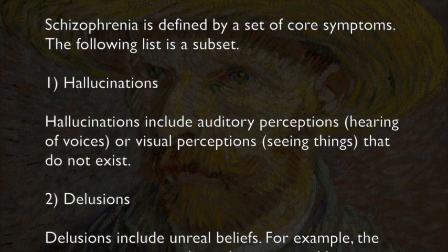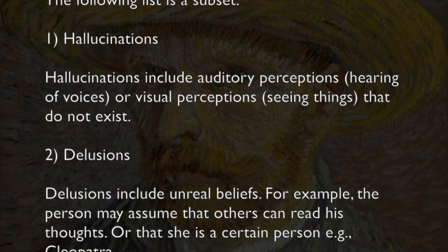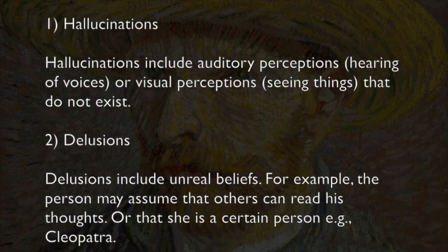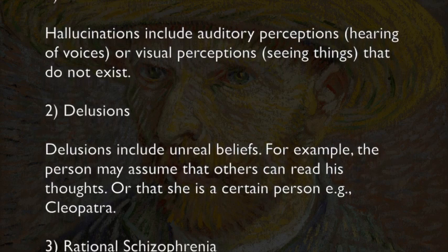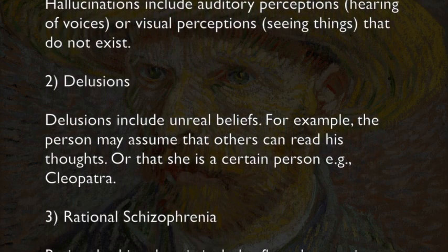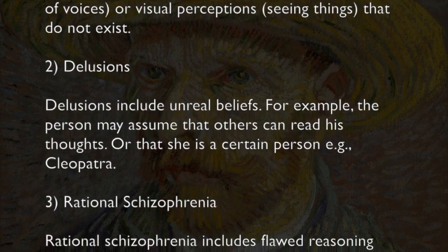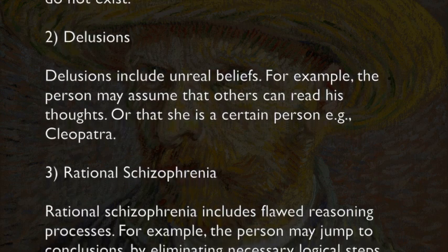Second: Delusions. Delusions include unreal beliefs. For example, the person may assume that others can read his thoughts, or that she is a certain person — for example, Cleopatra.